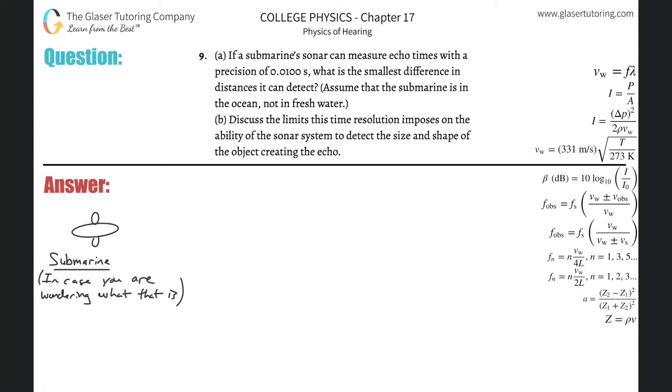Number nine, letter A. If a submarine sonar can measure echo times with a precision of 0.01 seconds, what is the smallest difference in distances it can detect? Assume the submarine is in the ocean.